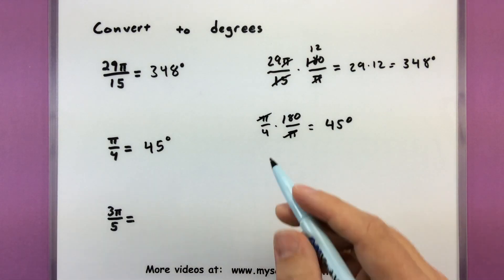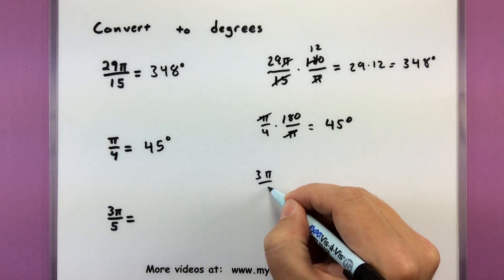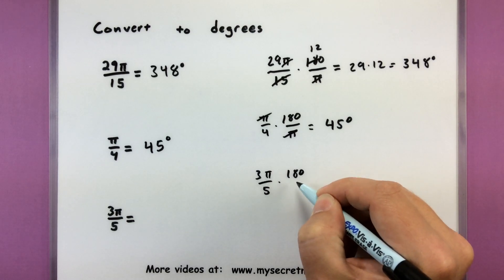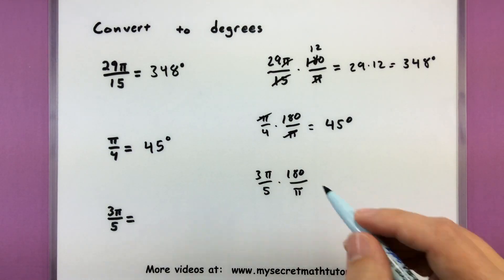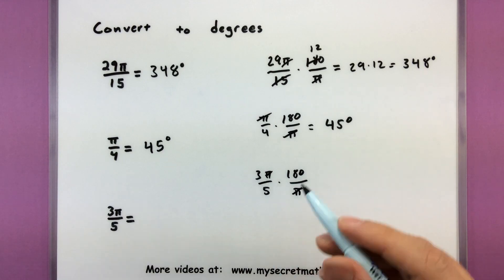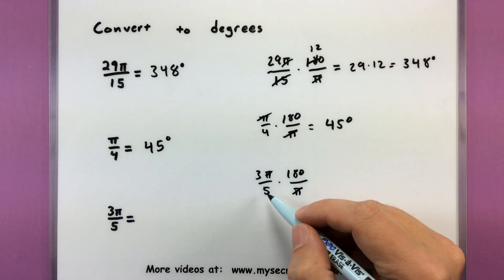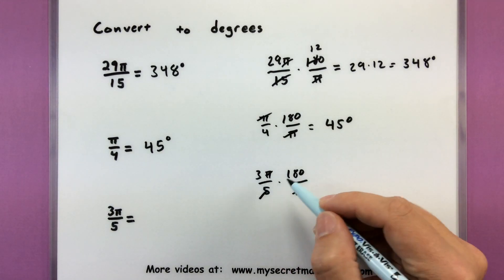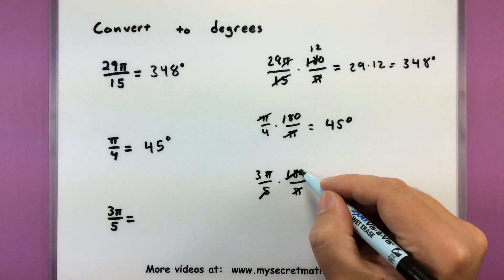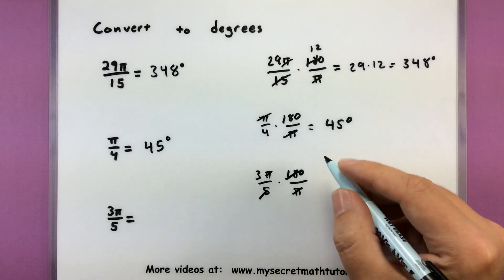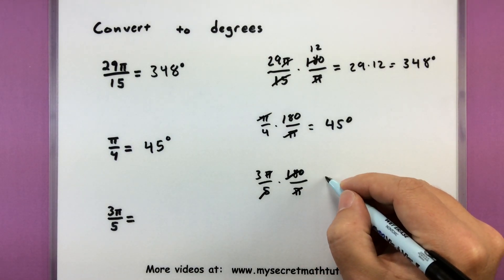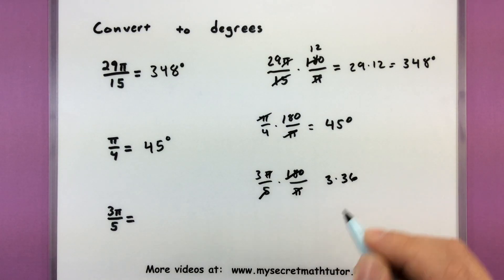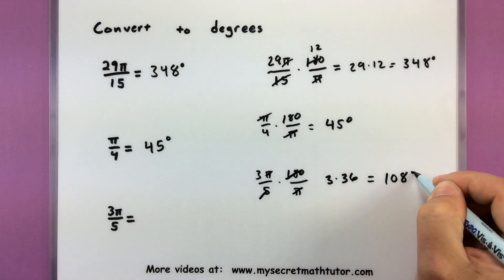And one more, let's see, 3 pi over 5, multiplied by 180 over pi. Cancel out these little pi's, 5 goes into 180, just like it did last time. Let's see, what's left over? 3 times 36. So 108.